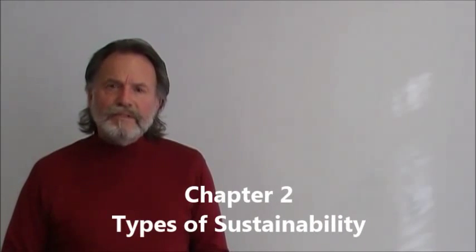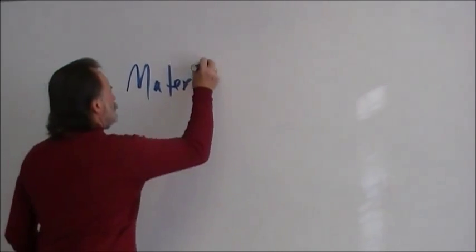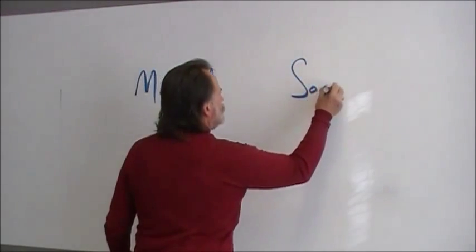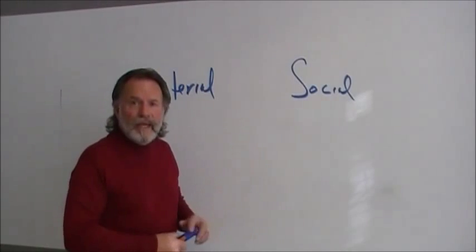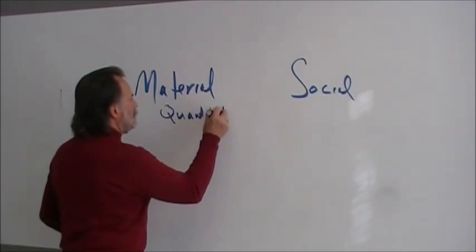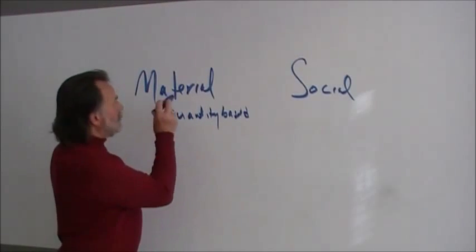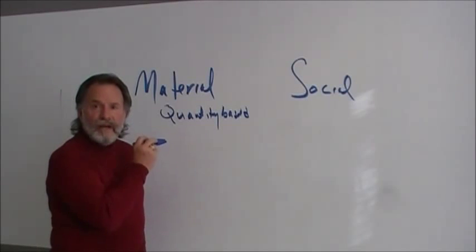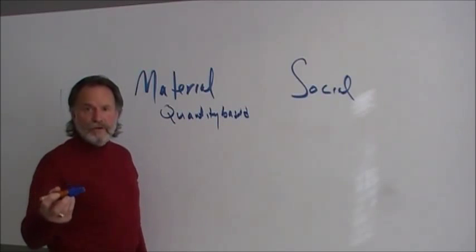Chapter two, types of sustainability. There are basically just two types. Material and social. Material sustainability is quantity based. The resource for material sustainability is the material environment. Natural resources. We think in terms of petroleum, trees, arable land, water, air, mining, and so forth.